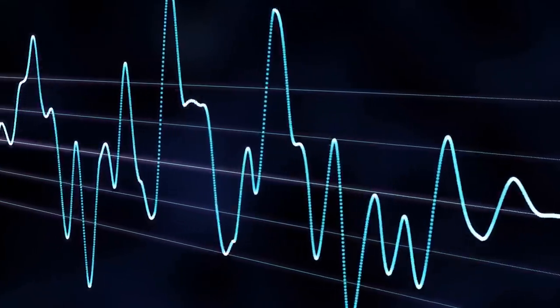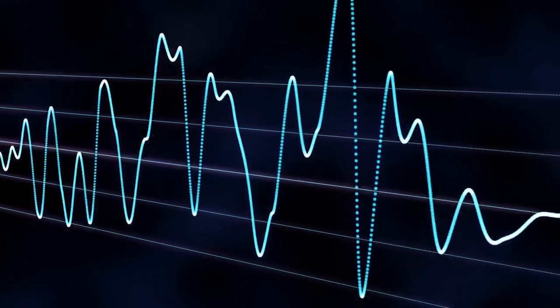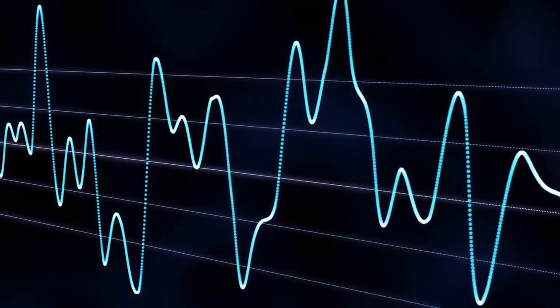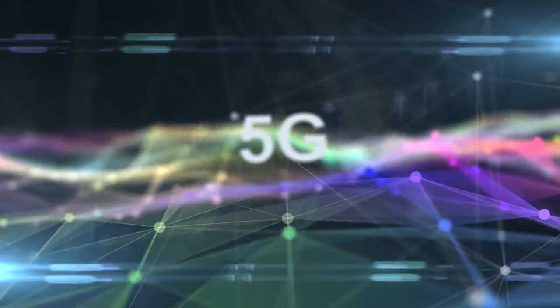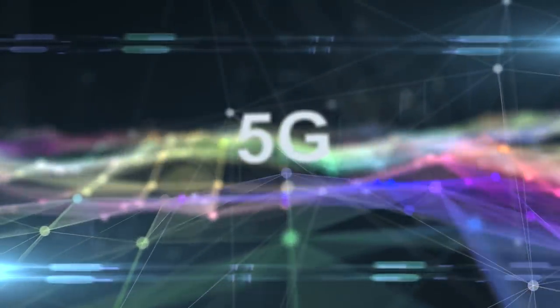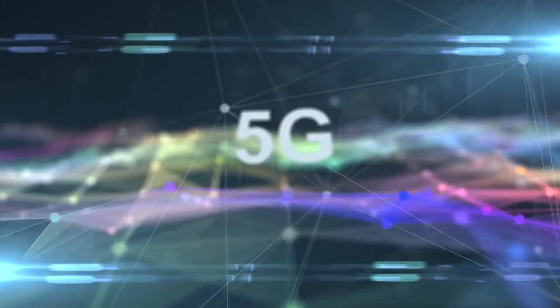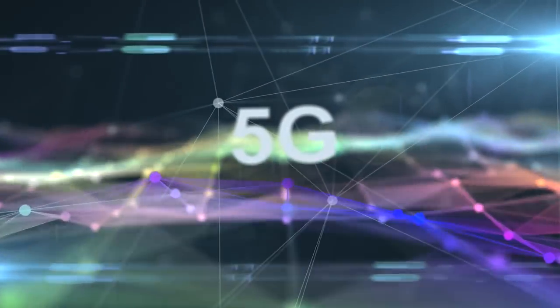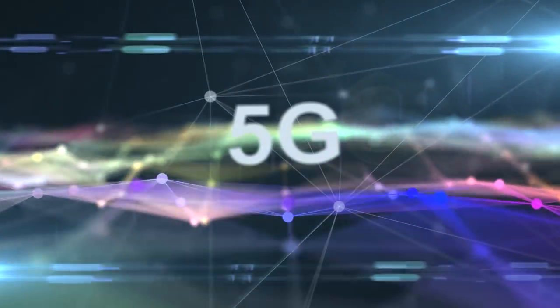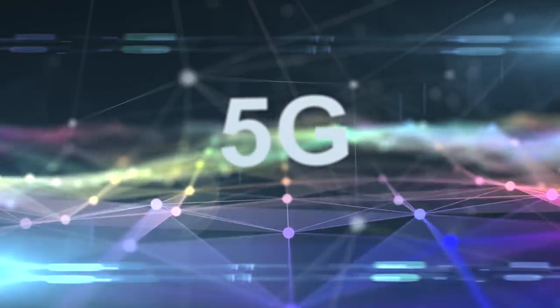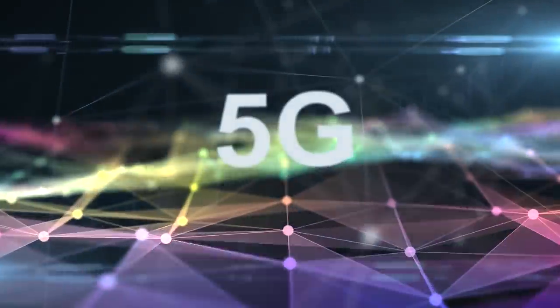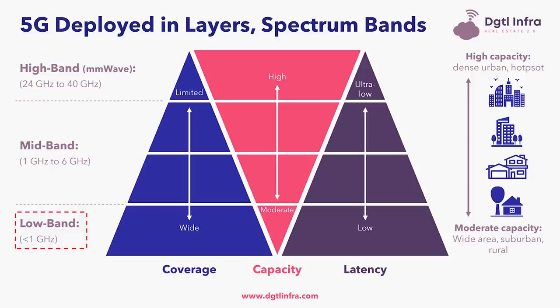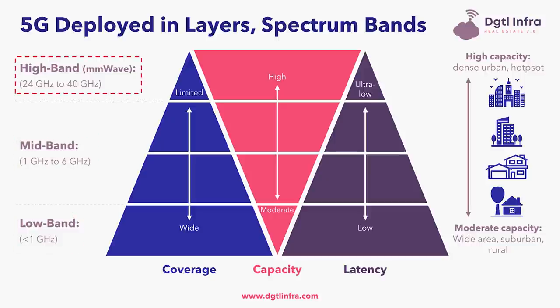So what is spectrum and why is it important? Spectrum is the lifeblood of the wireless industry. In order to build a fully operational 5G network, U.S. carriers need to have three layers of spectrum: low, mid, and high band.